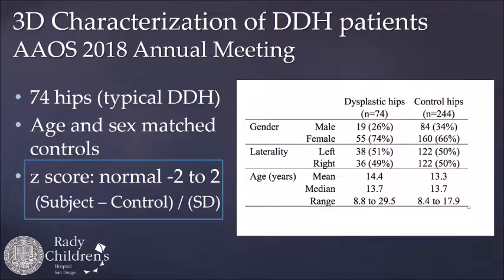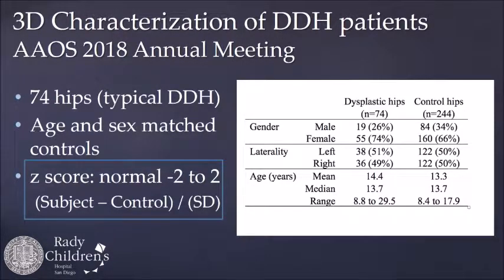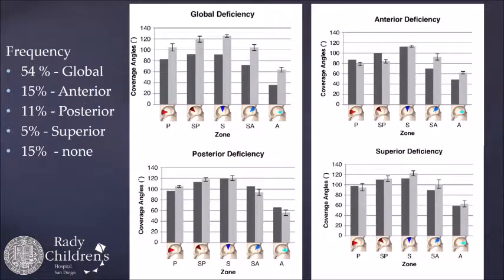The next step, to be presented at the academy meeting this coming March: we looked at our group of DDH patients that had CT analysis pre-op, totaling 74 hips. We can age and sex match each patient to their appropriate controls and developed a Z-score — the difference between the subject's measures minus the control divided by the standard deviation. Based on previously published criteria, minus 2 to 2 is considered a normal Z-score. Out of those DDH patients, we found four types of deficiency: global deficiency, anterior deficiency, posterior deficiency, and purely lateral deficiency.